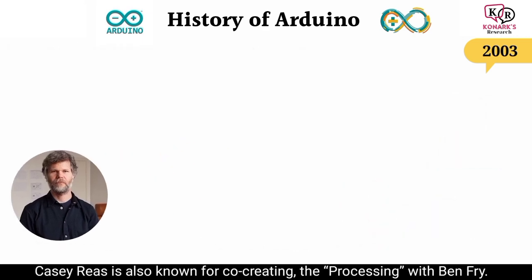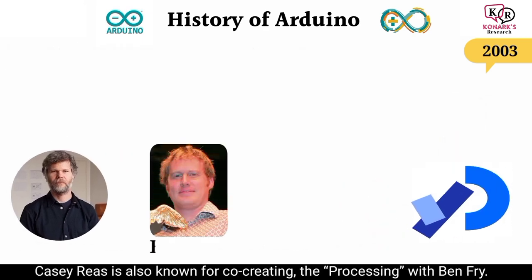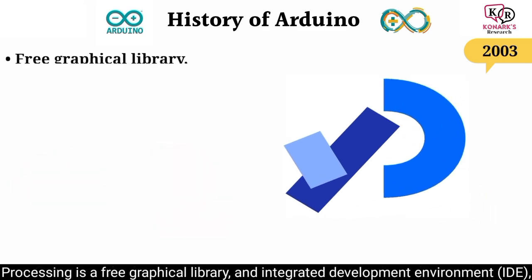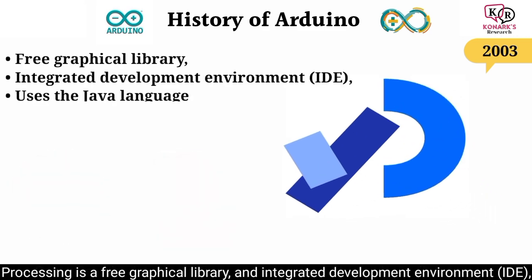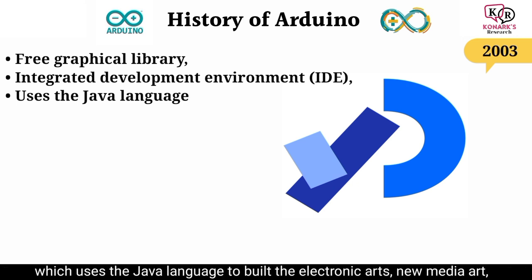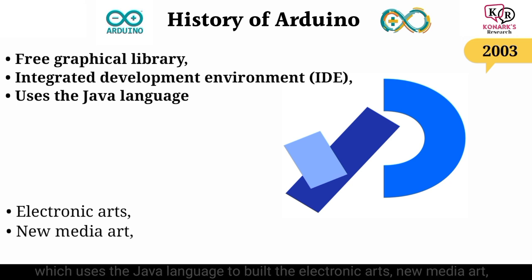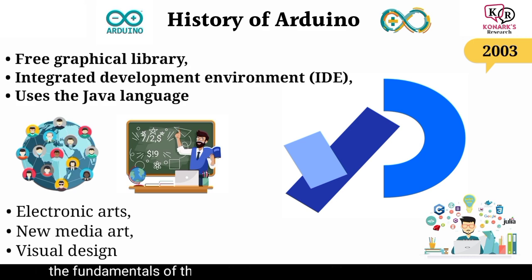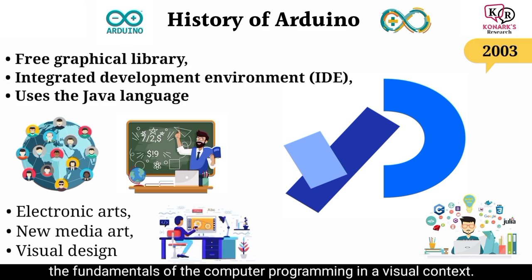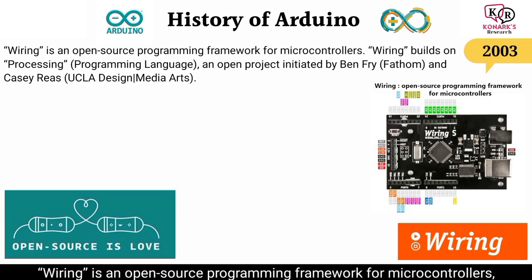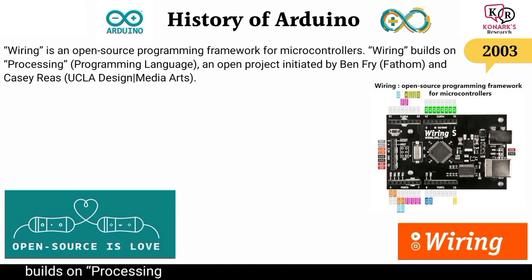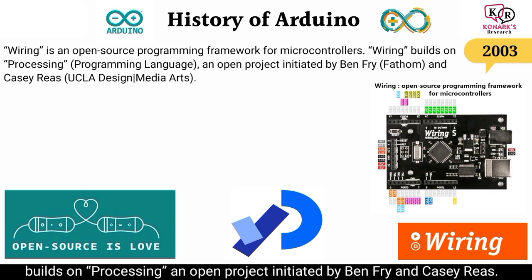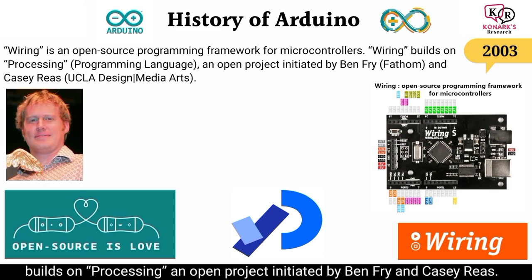Casey Reas is also known for co-creating Processing with Ben Fry. Processing is a free graphical library and integrated development environment (IDE) which uses the Java language to build the electronic arts, new media art, and visual design communities, with the purpose of teaching non-programmers the fundamentals of computer programming in a visual context. Wiring is an open source programming framework for microcontrollers, built on Processing.